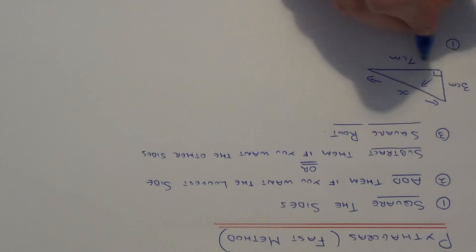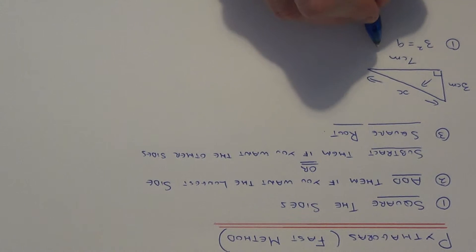So step one, square the two sides which you are given. So three squared is nine, seven squared is forty-nine.